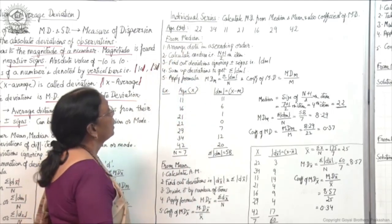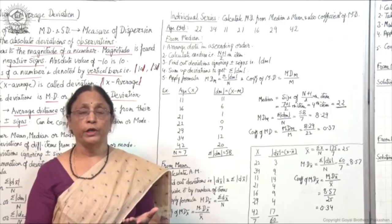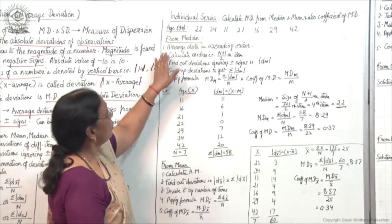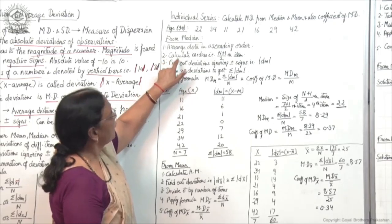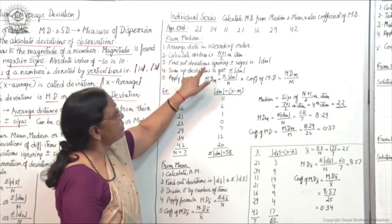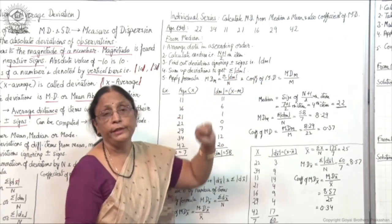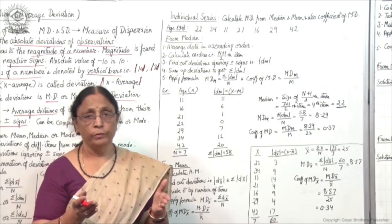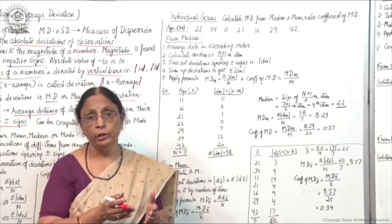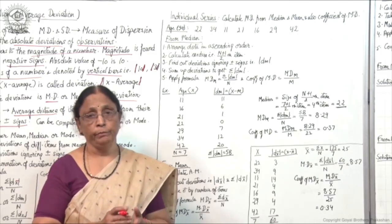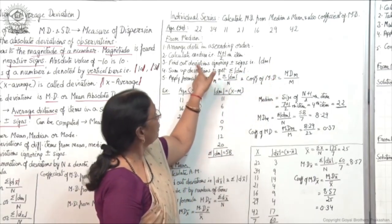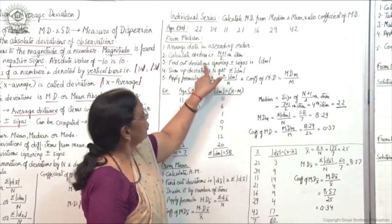If calculating mean deviation from median, follow these steps. First: arrange data in ascending order — this is the first step for finding median. Second: calculate median as the (n+1)/2 th item. Third: find deviations ignoring plus and minus signs, denoted as |dm| — d because you are taking deviations, m because deviations are from median.